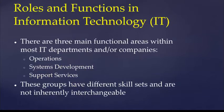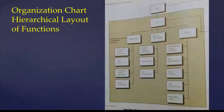Roles and functions in IT. There are three main functional areas within most IT departments and companies: operations, systems development, and support services. These groups have different skill sets and are not inherently interchangeable. The organizational chart shows a hierarchical layout of functions, with the operations of the IT department broken into these three systems.